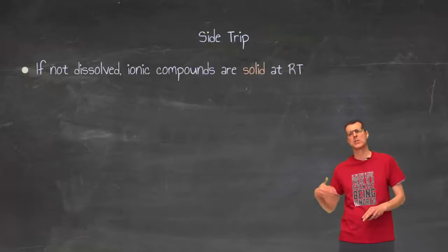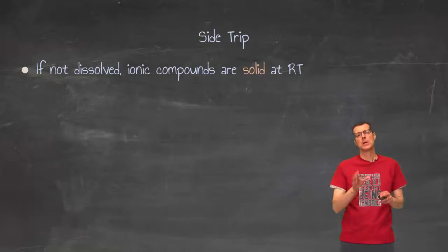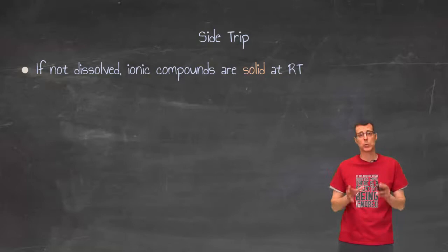To go off a little bit of a tangent and leading ourselves into solubility is when you have an ionic compound, an ionic compound is normally going to be a solid at room temperature. A pure ionic compound will be a solid at room temperature.